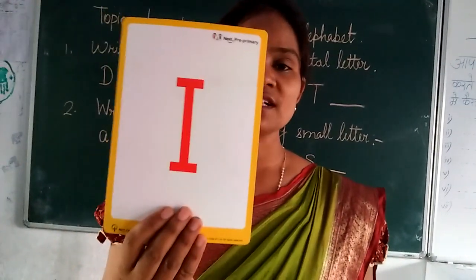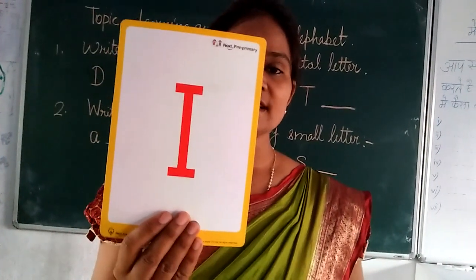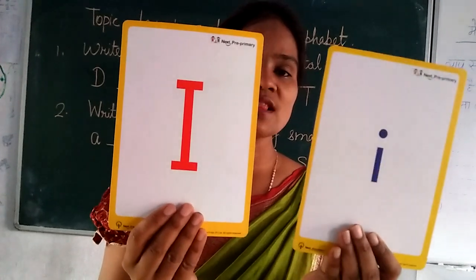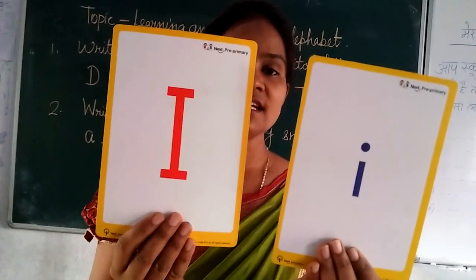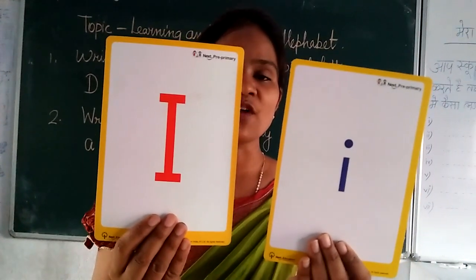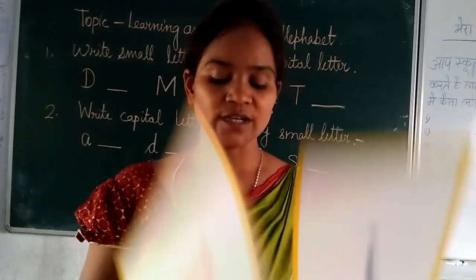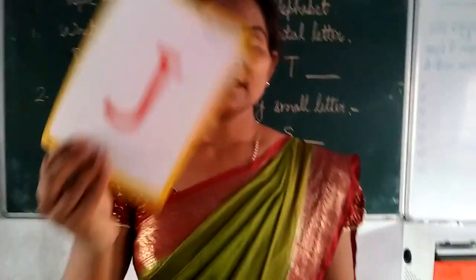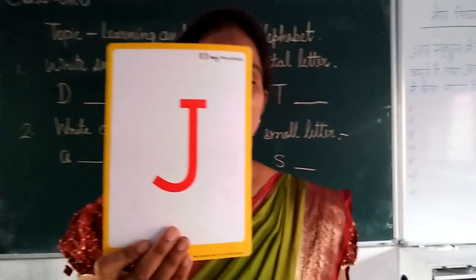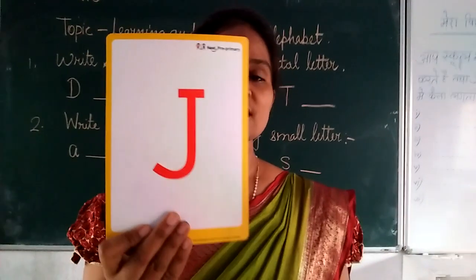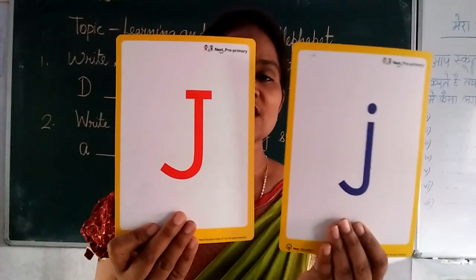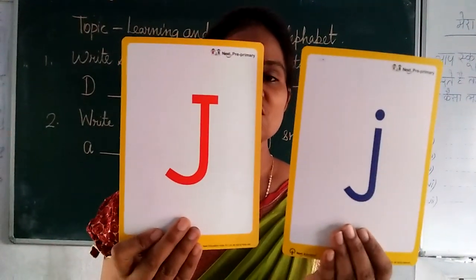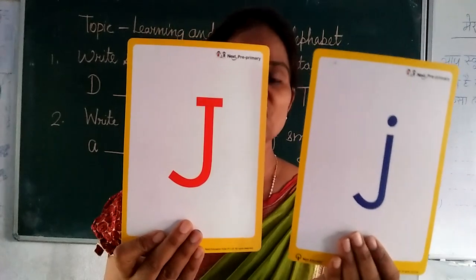Capital I. Small I. I for ice cream. Capital J. Small J. J for jet.